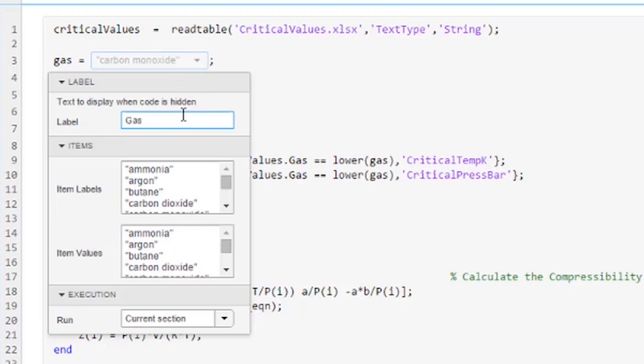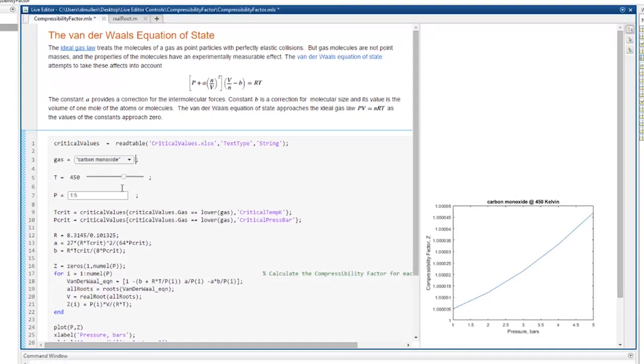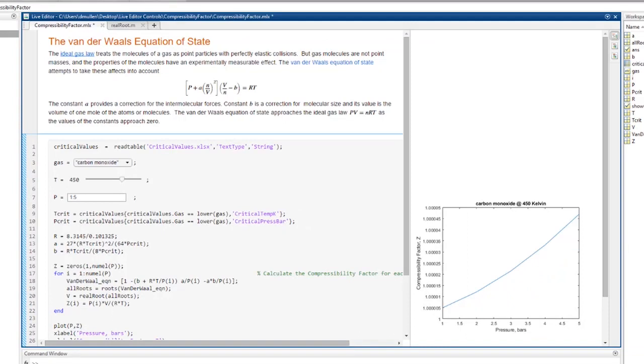Labeling controls clearly and concisely is important because of another live editor control functionality, hiding code. Sometimes, when you share code with others, you don't want them to open and scroll through every last line of code you wrote. You might not want to overwhelm them, or maybe you just want to keep some of the details to yourself.